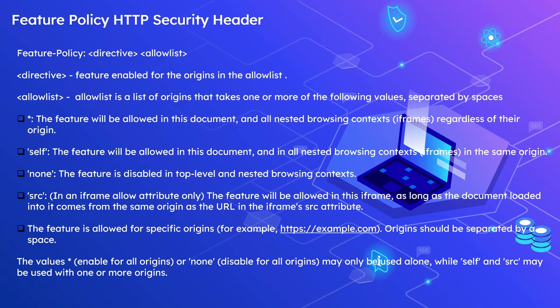This is the syntax to specify the Feature Policy header. Feature-Policy is the header name, then you specify the directive, then the allow list. The directive specifies the feature enabled for the origins in the allow list. The allow list is a list of origins that takes one or more values, and multiple allow list entries should be separated by spaces. Star means the feature will be allowed in this document and all nested browsing contexts, including iframes, regardless of their origin.